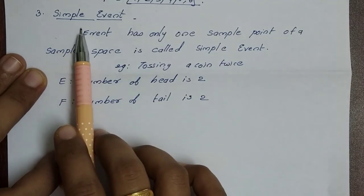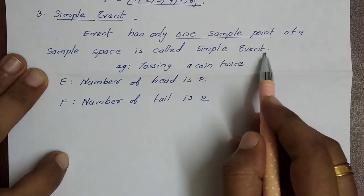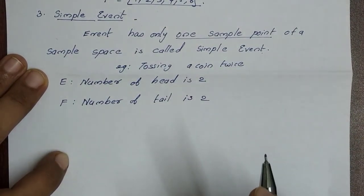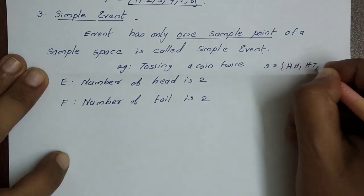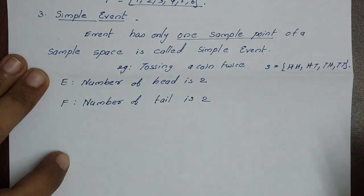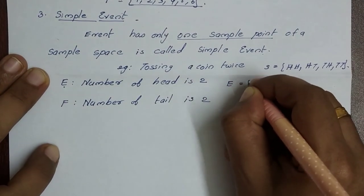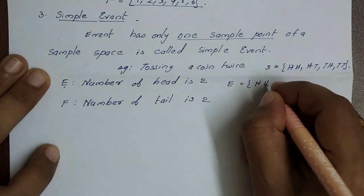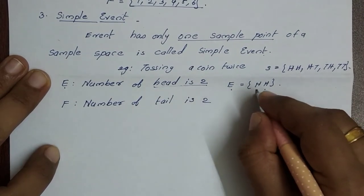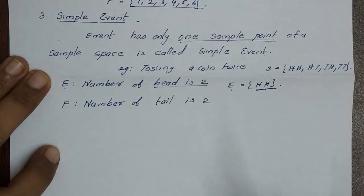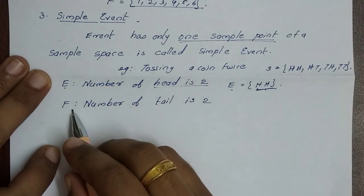The next type of event is a simple event. A simple event has only one sample point of the sample space. For tossing two coins, the sample space is {HH, HT, TH, TT}. The number of tails is 2 — that gives us {TT}, which has only one sample point, so this type of event is a simple event.